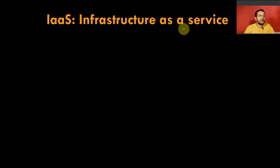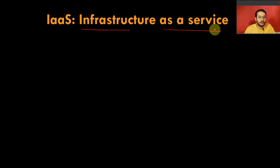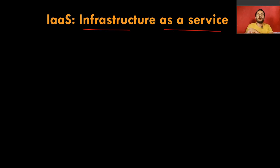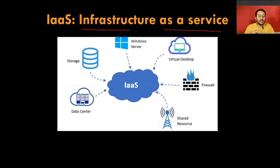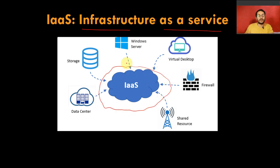The first service is Infrastructure as a Service. As the name suggests — infrastructure as a service. Think of it like building a house: first you make the infrastructure, then you put in the sofa, TV, and other things, and then you start living there. In the same way, when you say to AWS 'give me infrastructure,' they give you a bare machine.